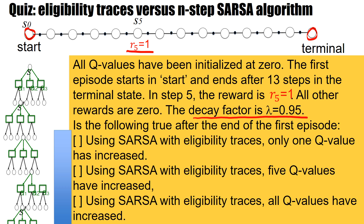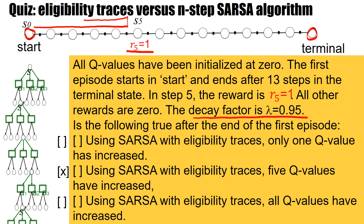Take a moment to think, and the answer comes now: only the second answer is correct. The five Q-values that will be increased are the five before the reward, with slightly different weights — biggest for the one just before the reward and then slowly decaying. It's only five steps because there are no steps before S0; otherwise it would extend towards infinity.